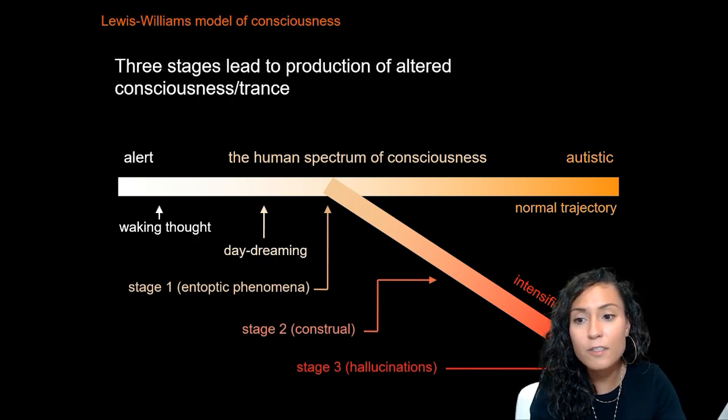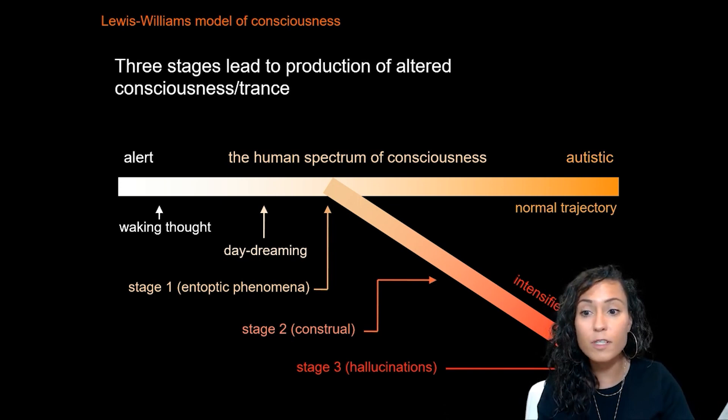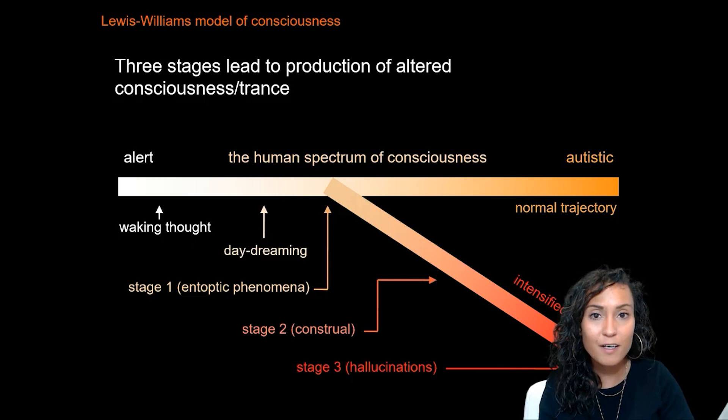Neuropsychological studies of trance states have shown the presence of three overlapping stages in the creation of altered consciousness: stage one, entoptic phenomena; stage two, construal; and stage three, hallucinations.